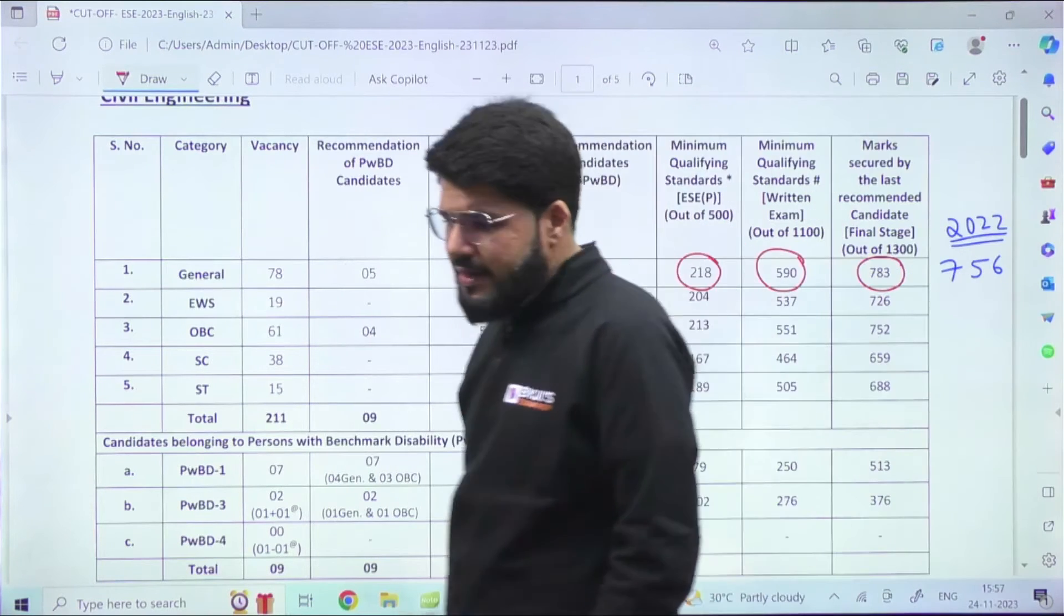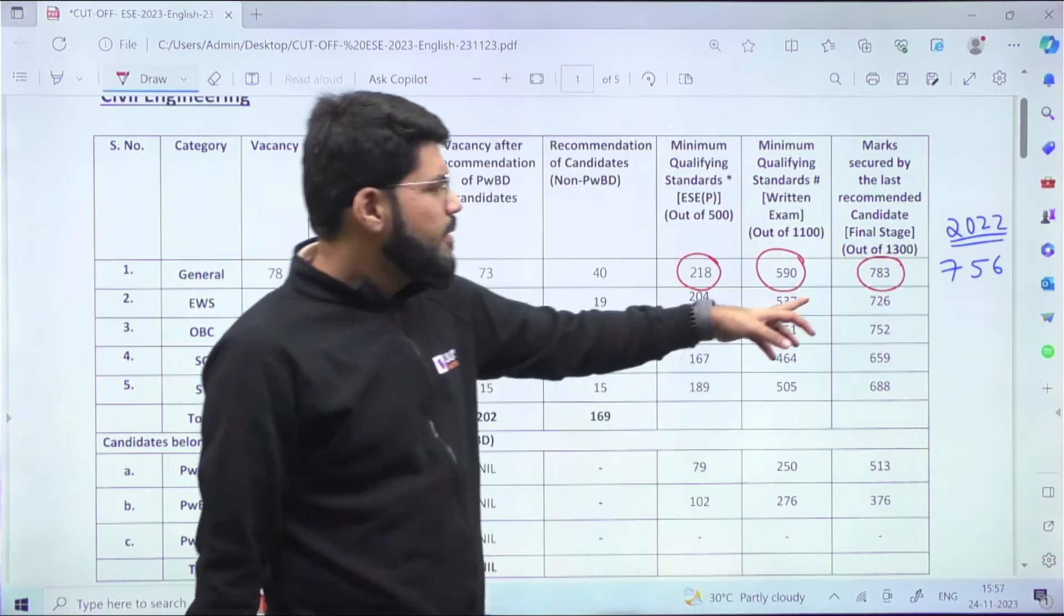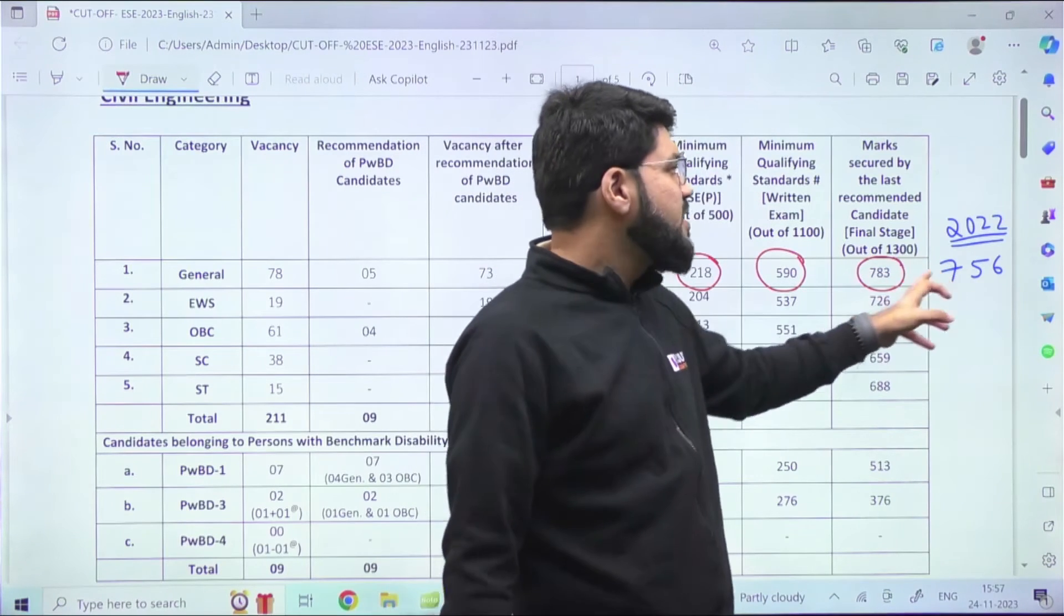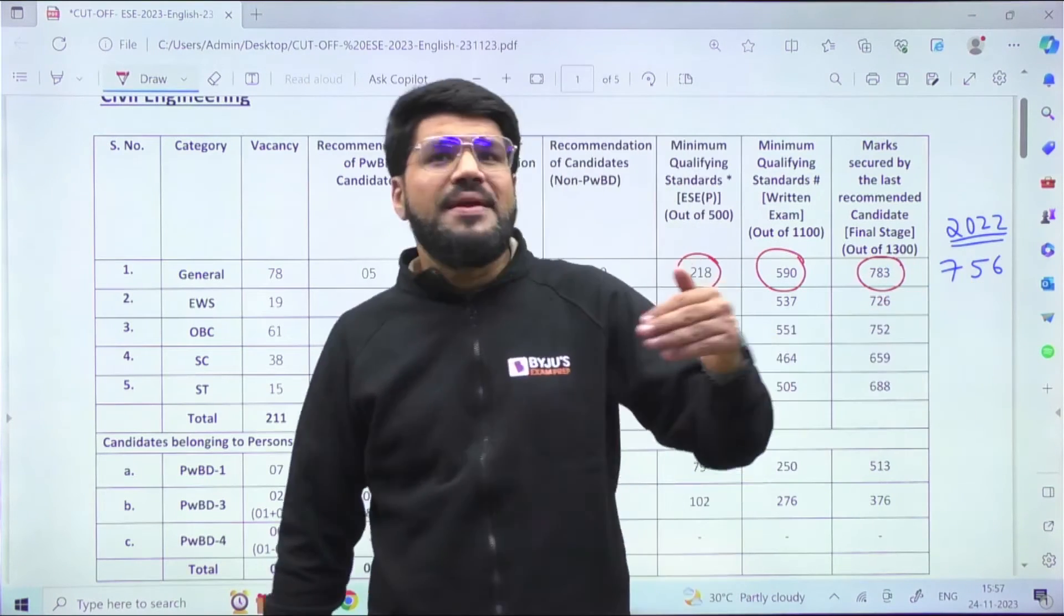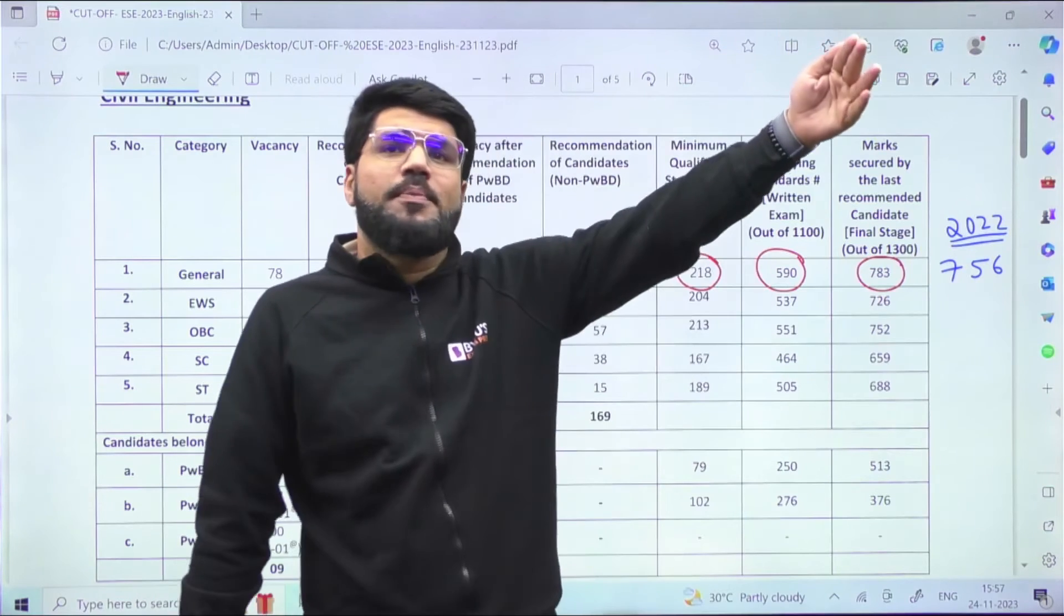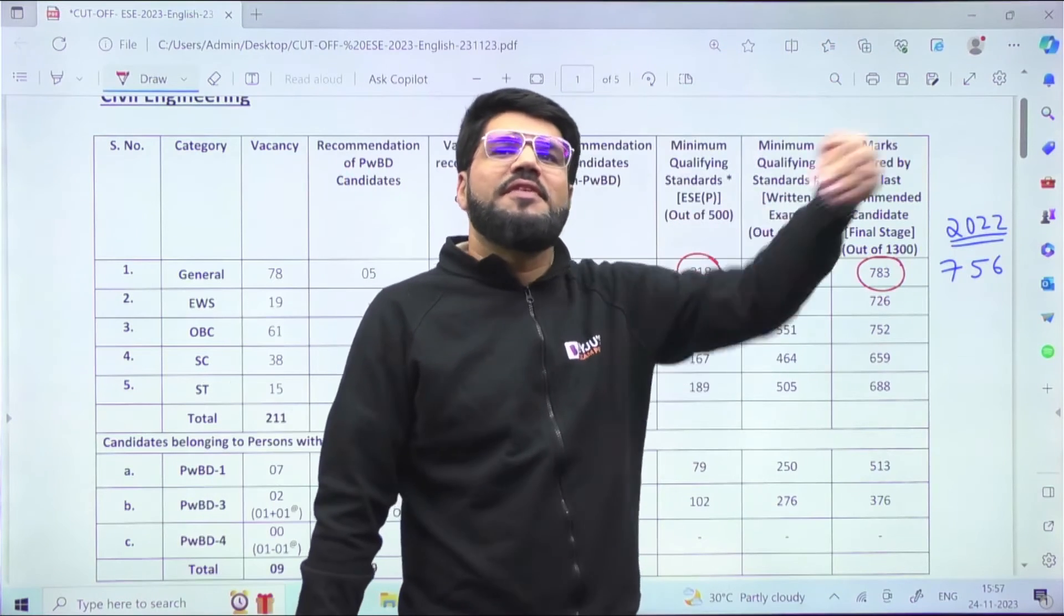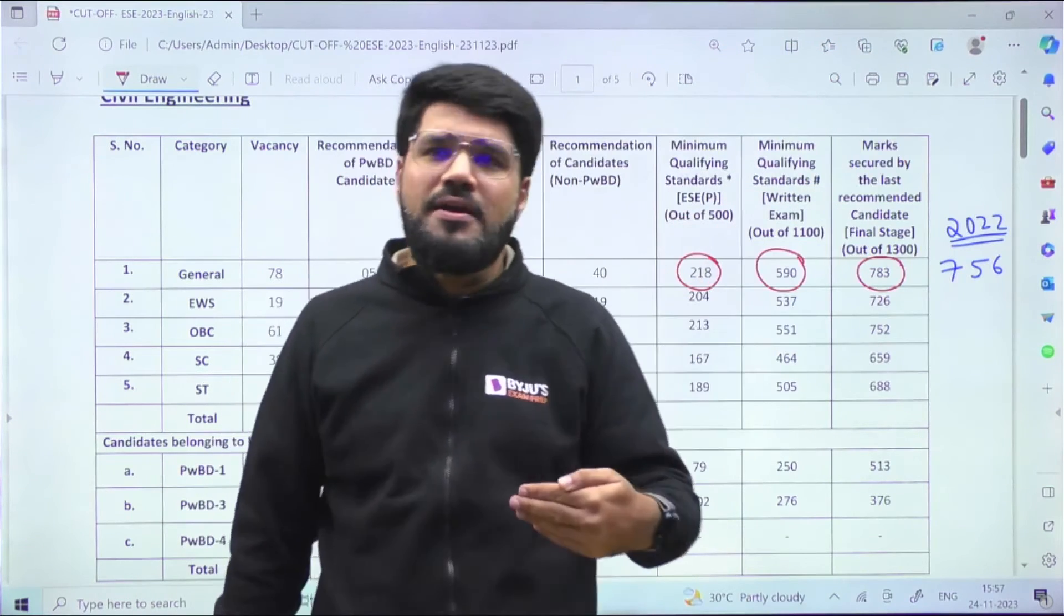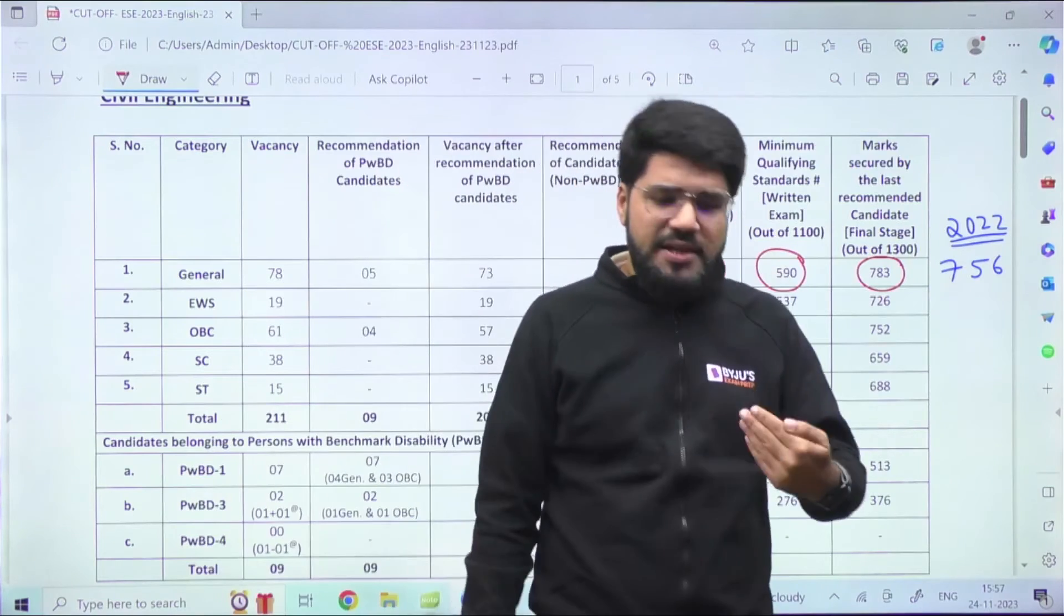So 783, and for prelims it is 218. Total written out of 1100, the cutoff is 590. For Civil, you can feel that these figures are nearly close to 60 percent. But it's not like a 60 percent cutoff means the topper is at 80 percent - if you take 65-70 percent, the topper will be around that.